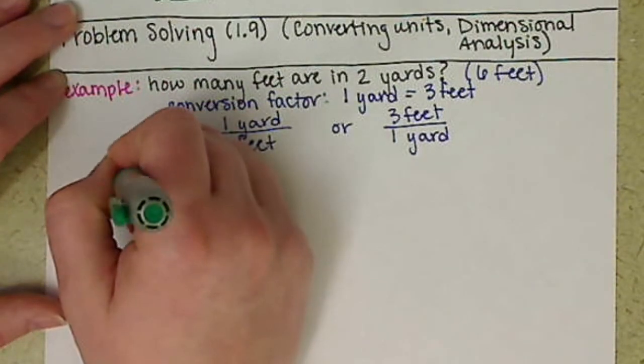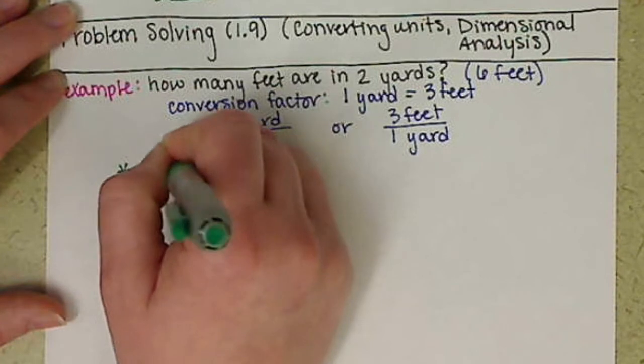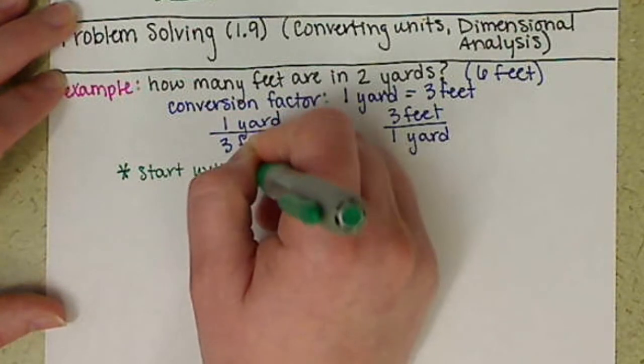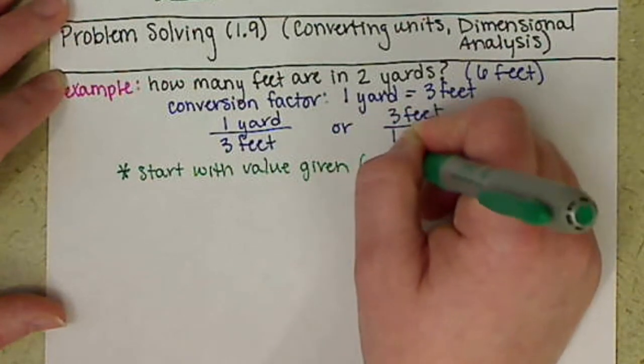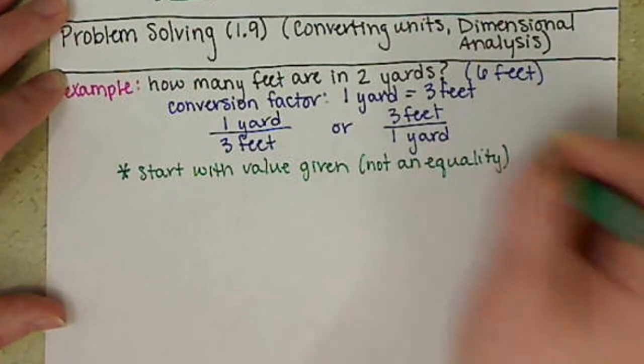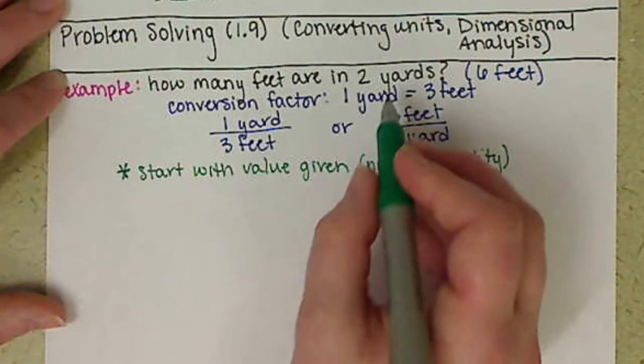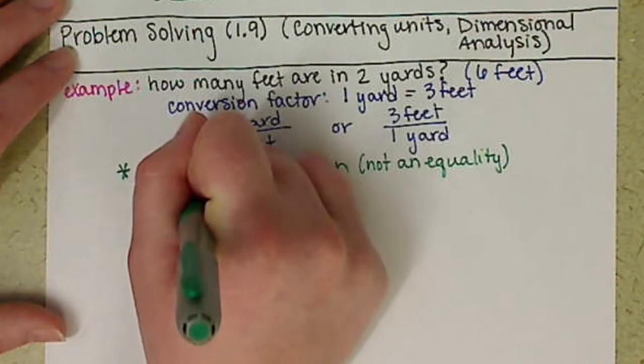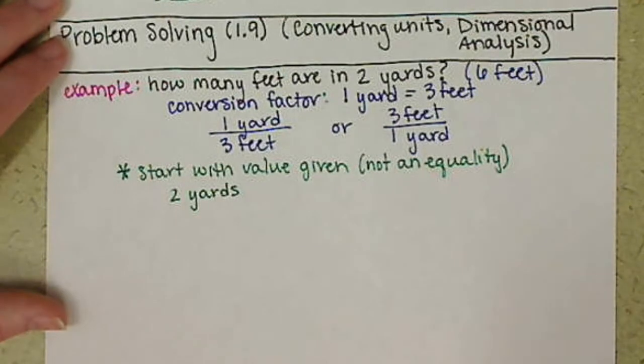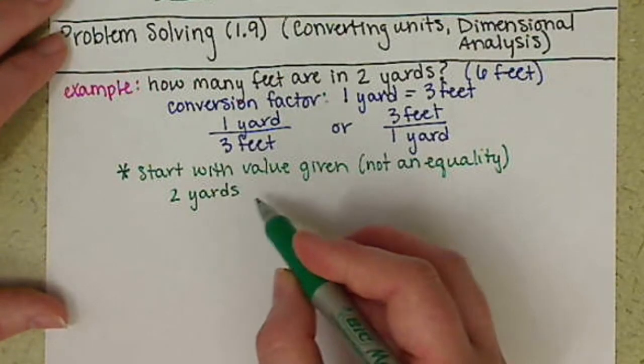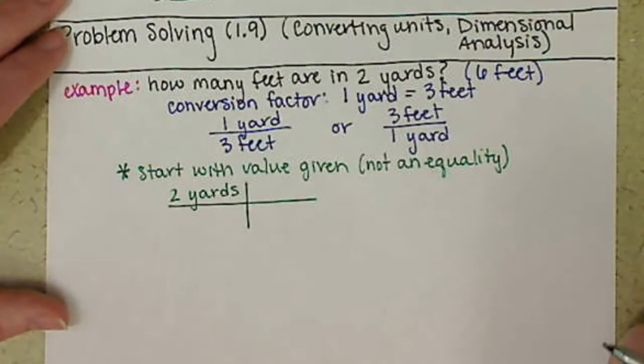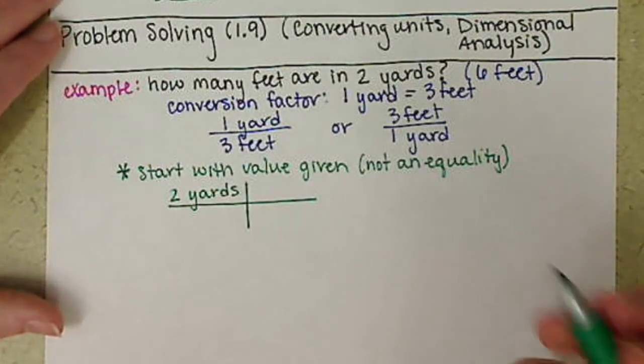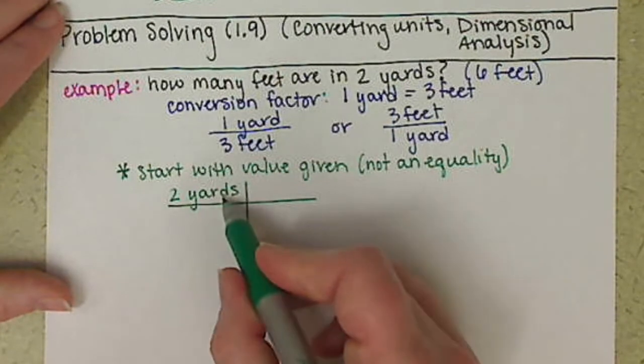To do this mathematically, we want to start with the value that you're given and not any quality. So we want to start with our two yards.